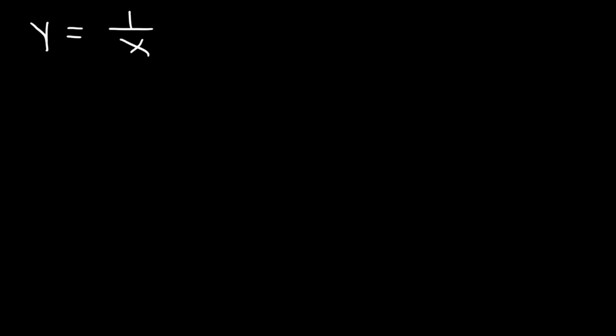Let's start with 1 over x. Based on the previous lesson, you know that this graph has a horizontal asymptote of y equals 0. Any time the function is bottom-heavy, meaning that the degree of the denominator is higher than that of the numerator, it's always going to be y equals 0 for the horizontal asymptote.